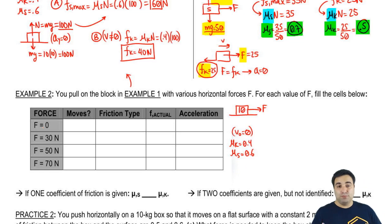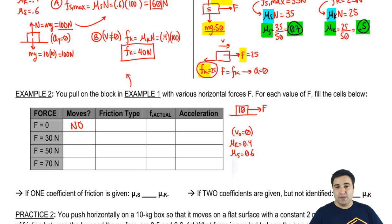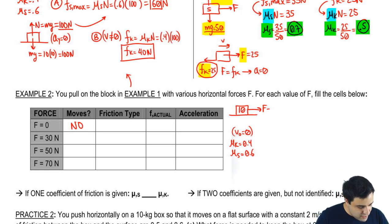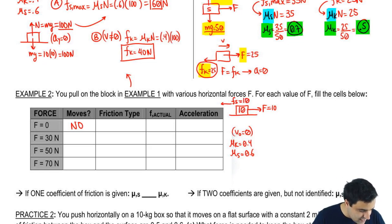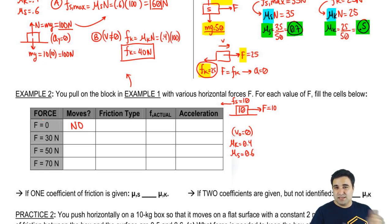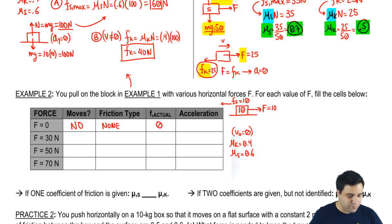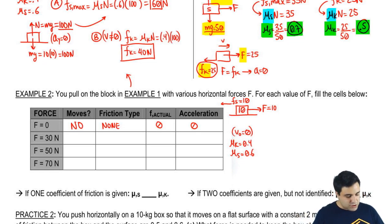The first force is 0 — I'm not pulling at all. Obviously it doesn't move. What kind of friction is acting? If you're not moving, there's no kinetic friction. Static friction opposes your pull, but if I'm pulling with 0, friction opposing me is also 0 — it doesn't exist. So there's no friction and acceleration is zero. Everything just sits there.